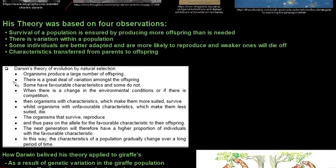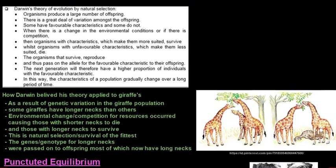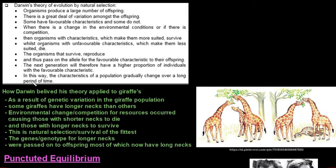So his theory was based on four observations. Survival of a population is ensured by producing more offspring than is needed. There has to be variation in a population. Some individuals are better adapted and more likely to reproduce and weaker ones will die off. Characteristics transferred from parents to offspring. So let's look at Darwin's theory of evolution by natural selection.